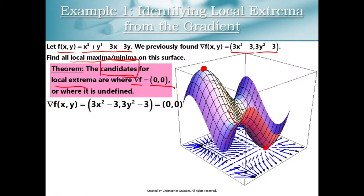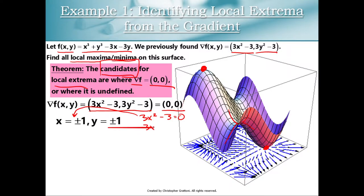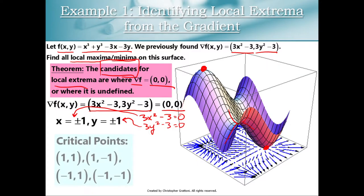So I'm going to take my equation for the gradient vector and set that equal to the zero vector and solve the two resulting equations. 3x² - 3 = 0 has a solution of x = ±1, and 3y² - 3 = 0 also has a solution of y = ±1. If you put that all together you get four candidates — four critical points: (1,1), (1,-1), (-1,1), and (-1,-1).